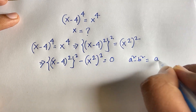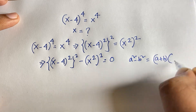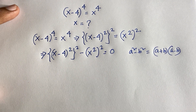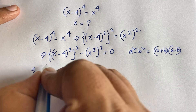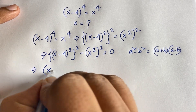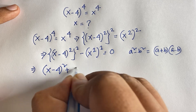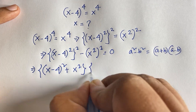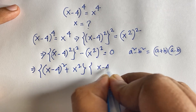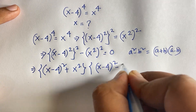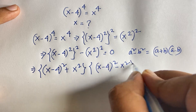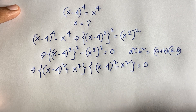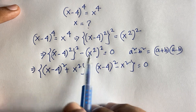We know that a squared minus b squared equals (a plus b)(a minus b). Applying this rule, the equation becomes: [(x minus 4) squared plus x squared] times [(x minus 4) squared minus x squared] is equal to 0.